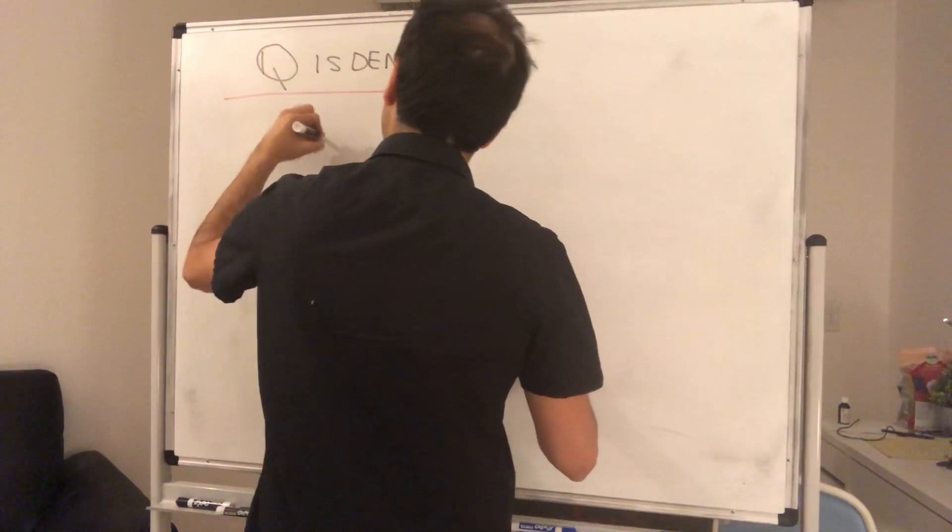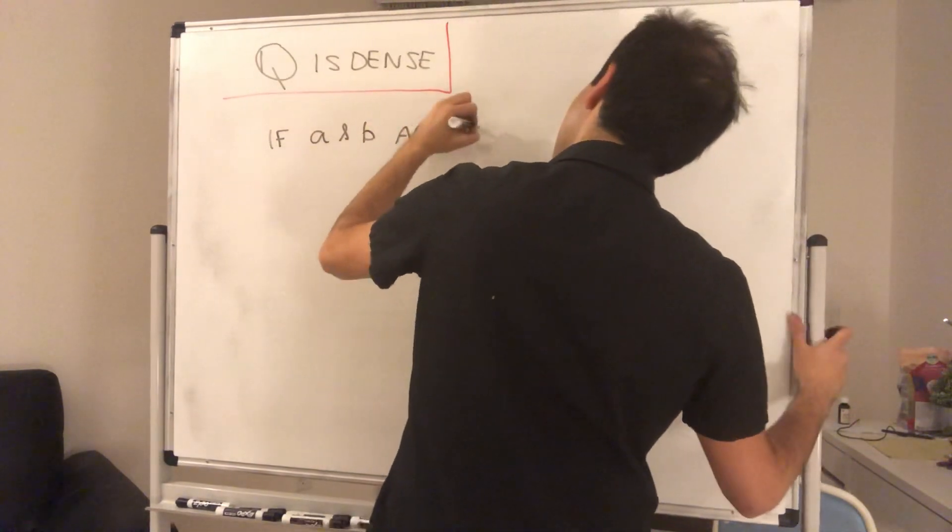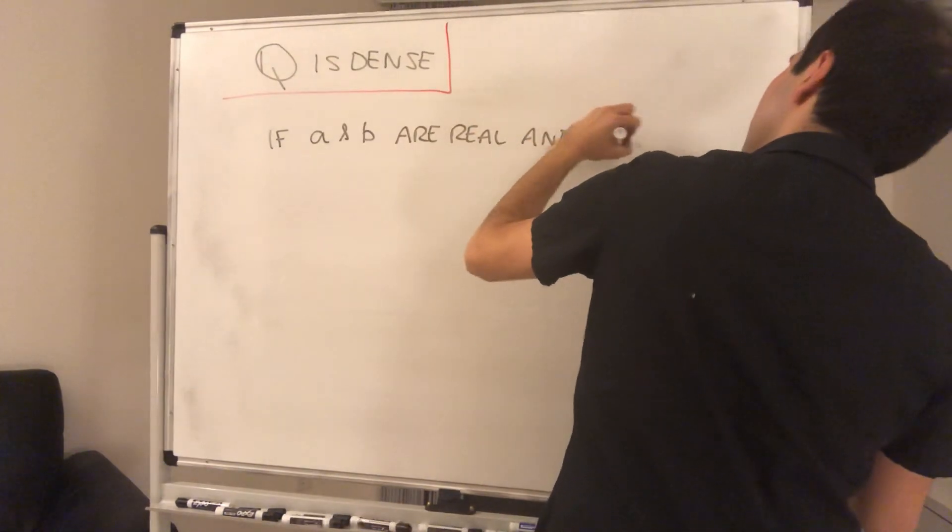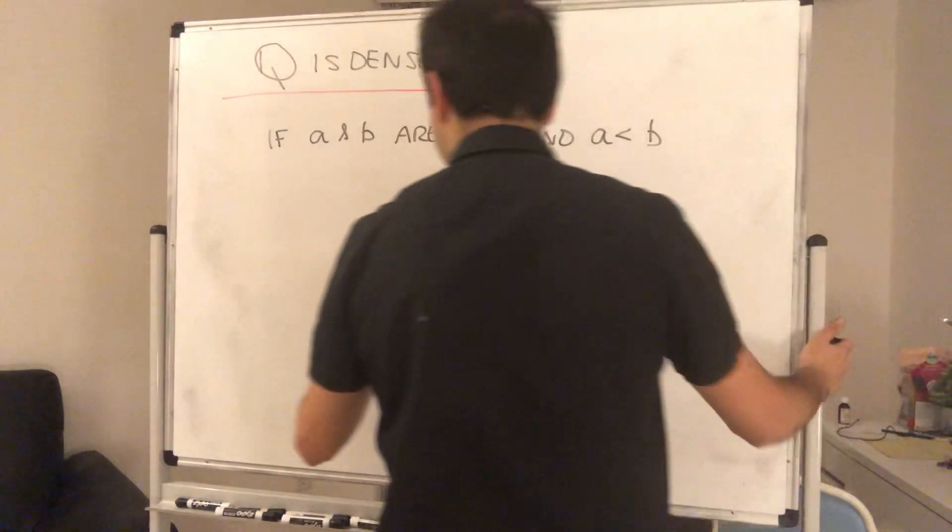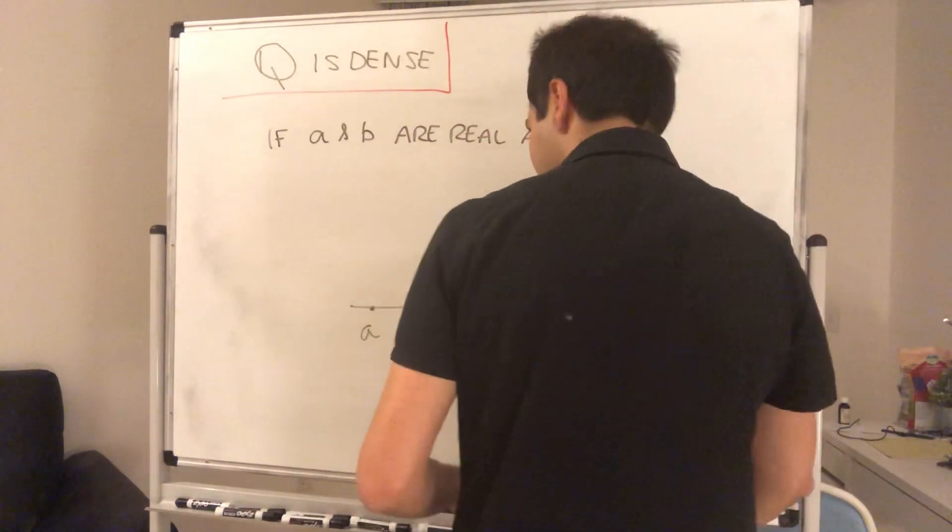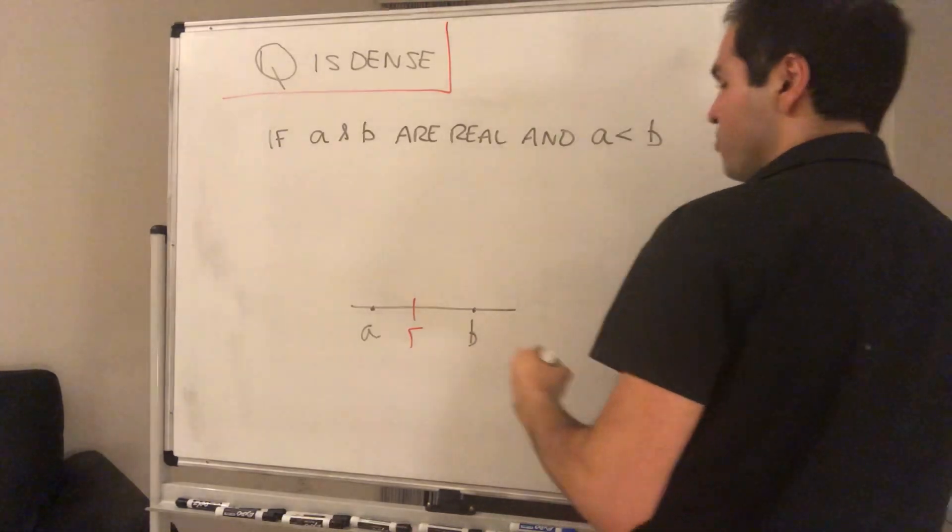So if a and b are real and let's say one is smaller than the other, a is less than b, so like in this picture, then you can always find a rational number r that's between them.